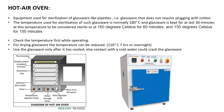Next is the hot air oven — equipment used for sterilization of glassware like pipettes. Generally, glasswares that do not require cotton plugging are sterilized here, since the openings of pipettes are too small to wrap or plug with cotton. The temperature used for sterilization is generally 170 to 180 degrees Celsius for 30 minutes.